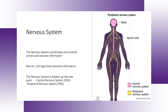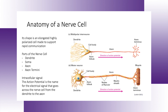The nervous system is broken up into two parts: the central nervous system and the peripheral nervous system. The central nervous system is where higher-order thinking occurs, with the peripheral nervous system being pretty much everywhere else in your body — for example, interacting with your muscles. The dendrite is where information comes into the nerve cell, and it goes through the axon to the axon terminus, which releases that information.